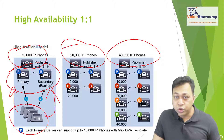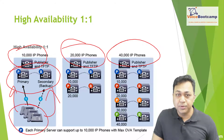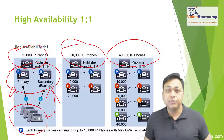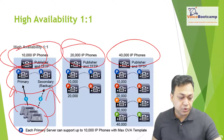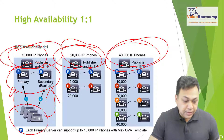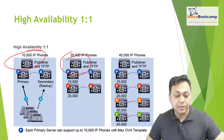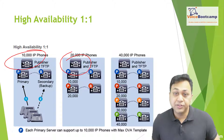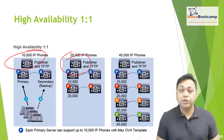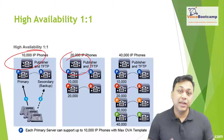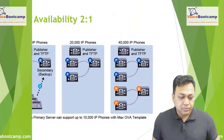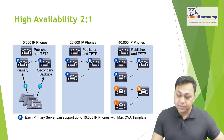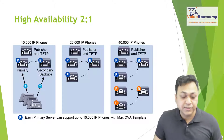For fault tolerance, you should have two TFTP servers to allow TFTP functionality. From the publisher's perspective, there can only be one publisher per cluster — whether it's a 10,000, 20,000, or 40,000 phone environment. Each cluster will have one dedicated publisher. You can have many subscribers, but there is only one publisher per cluster. A subscriber cannot be promoted to publisher, but subscribers maintain a read-only copy of the publisher database.